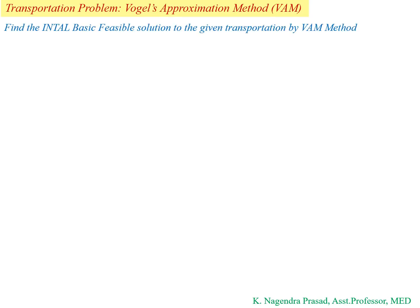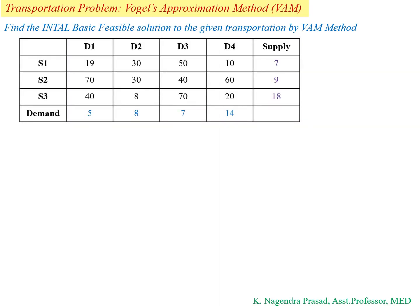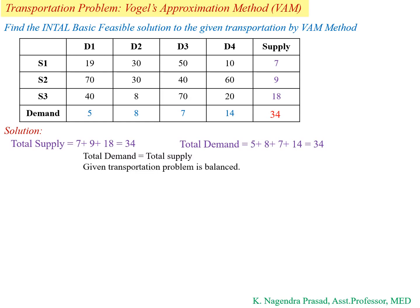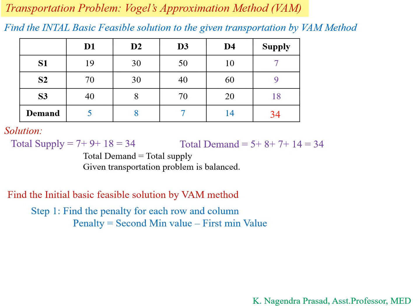Hello everyone. Today I am going to discuss the transportation problem using Vogel's Approximation Method (BIM). I will discuss this method with one example problem: find the initial basic feasible solution for the given transportation problem by BIM method. First, you have to check whether the given transportation problem is balanced or not. Here, total supply is 34 and total demand is 34, so total demand equals total supply — the problem is balanced.